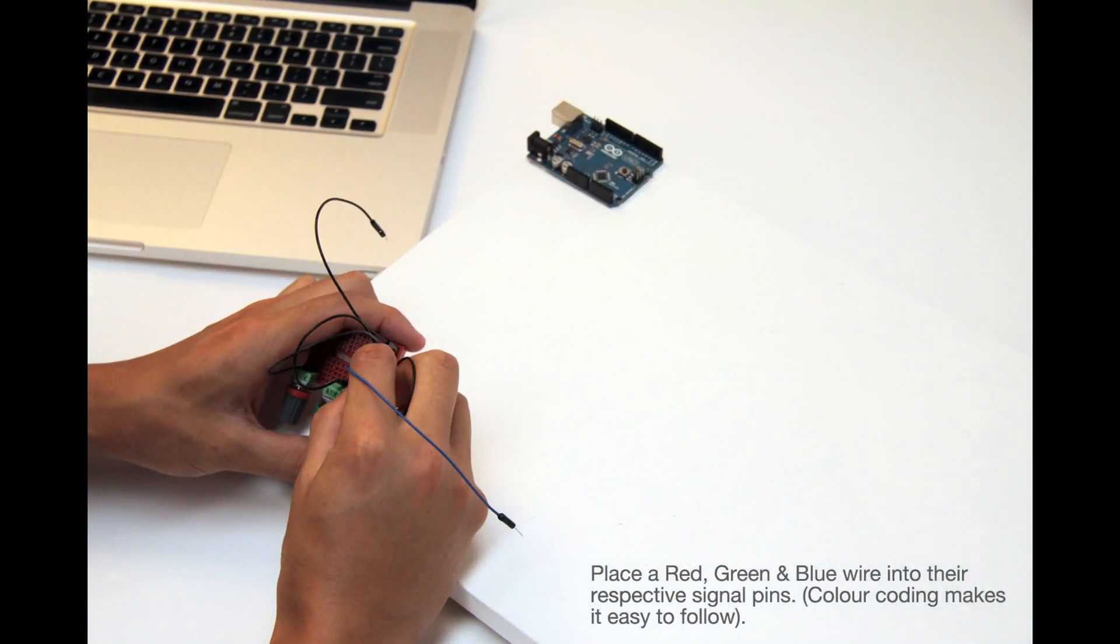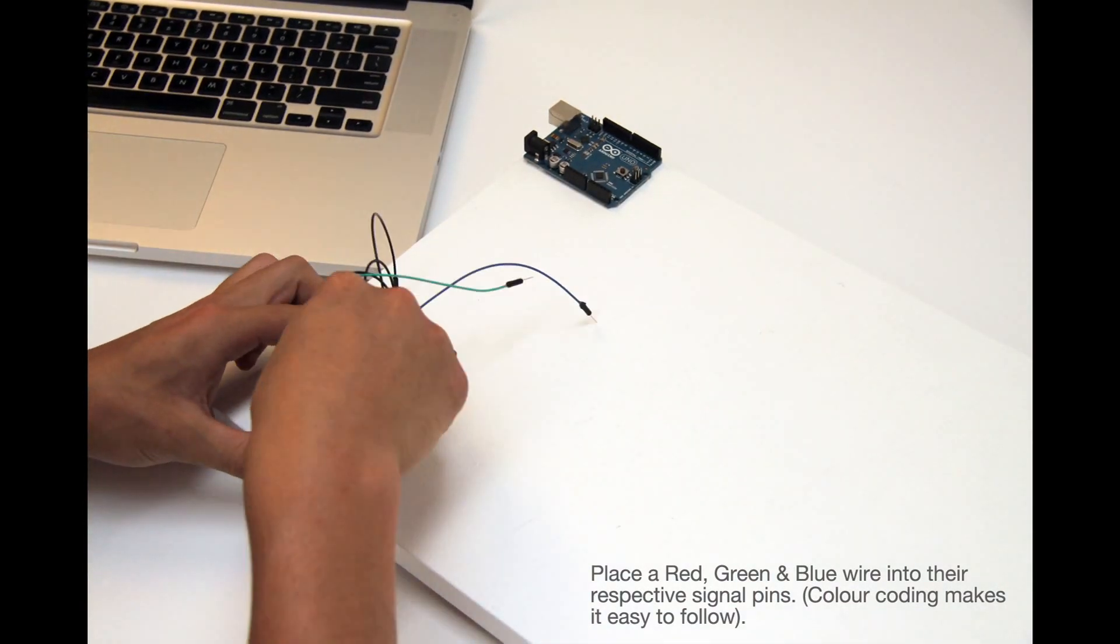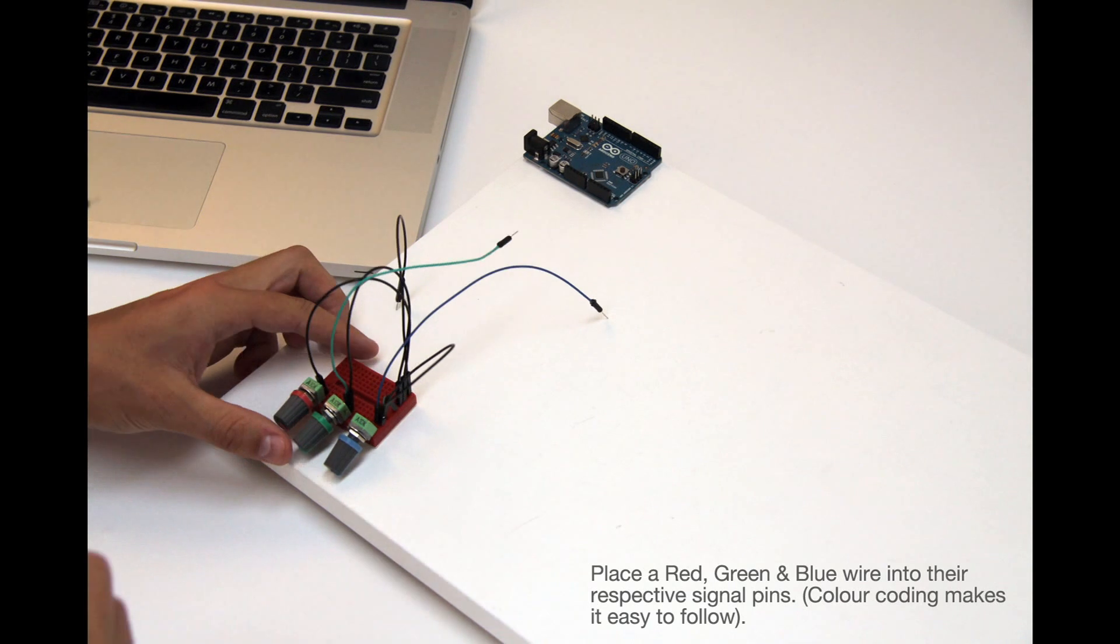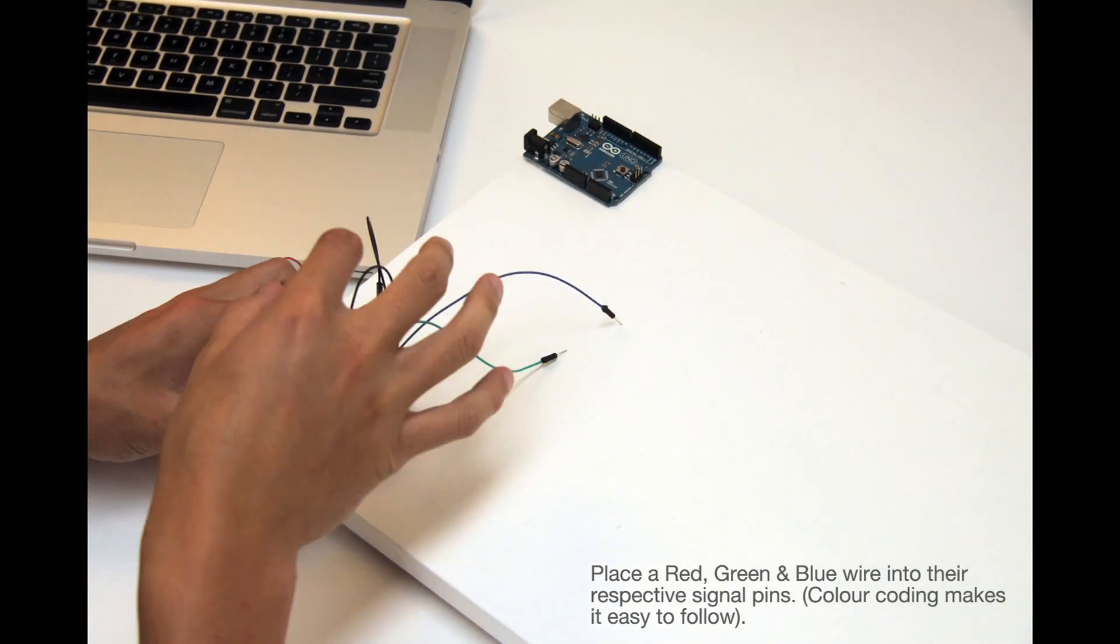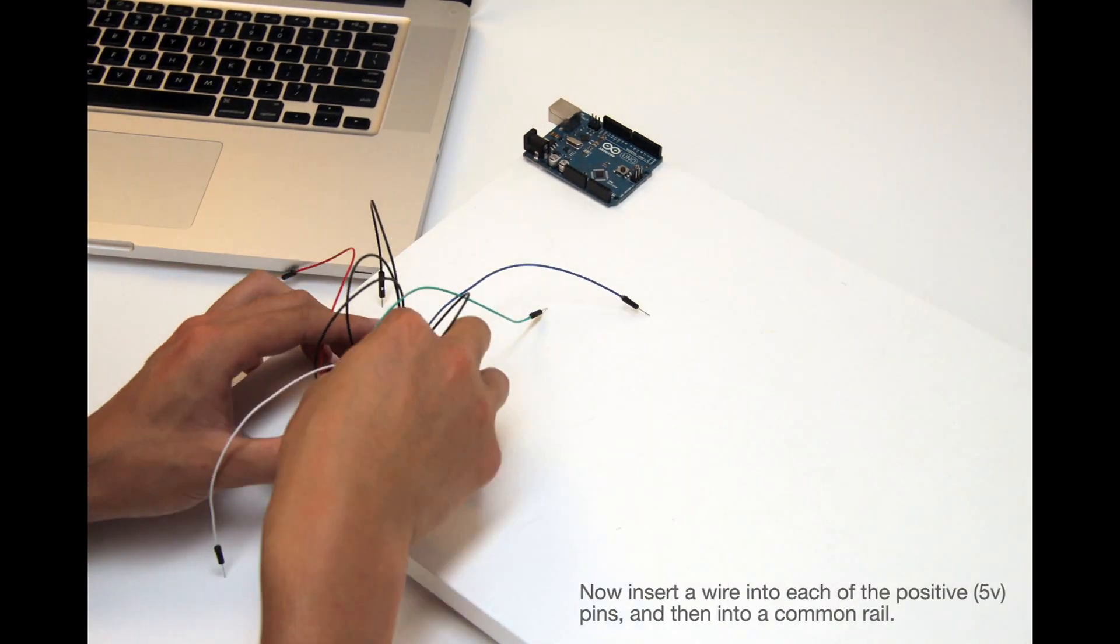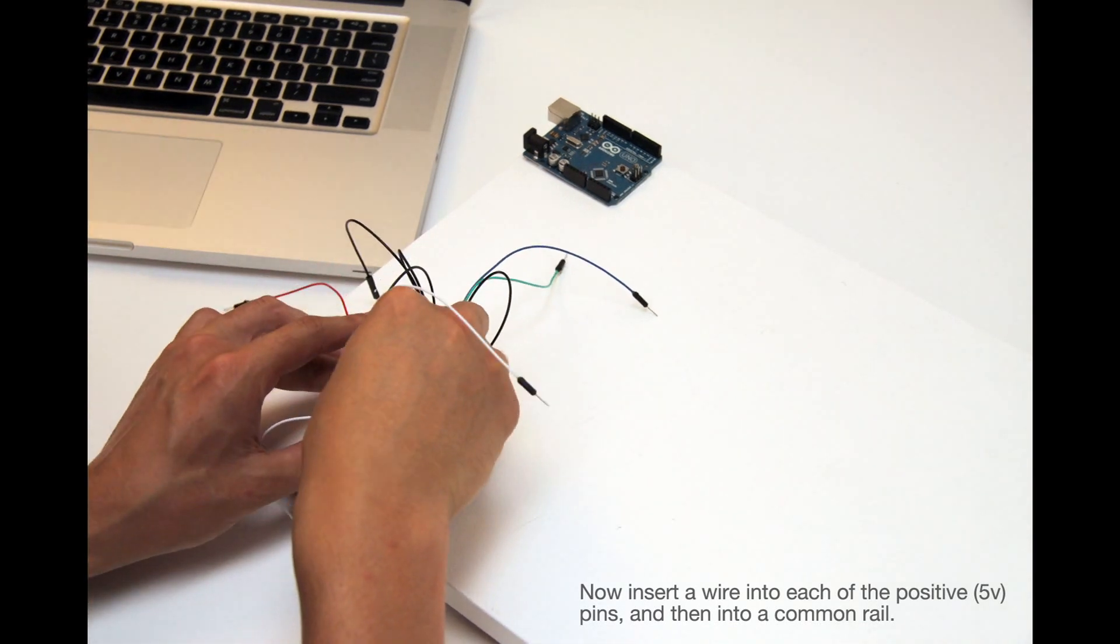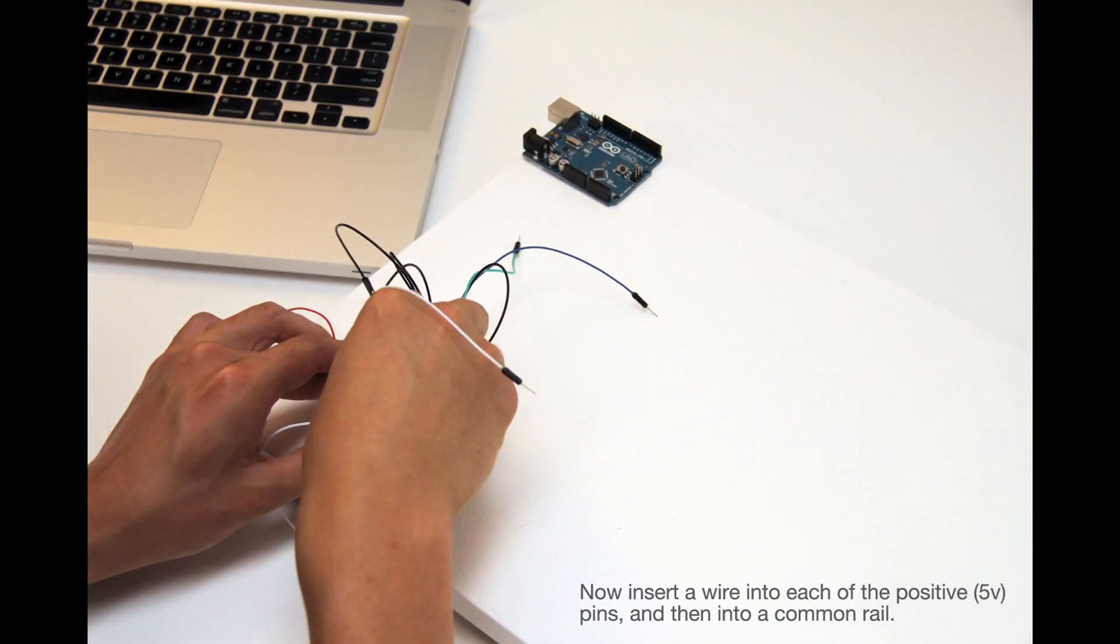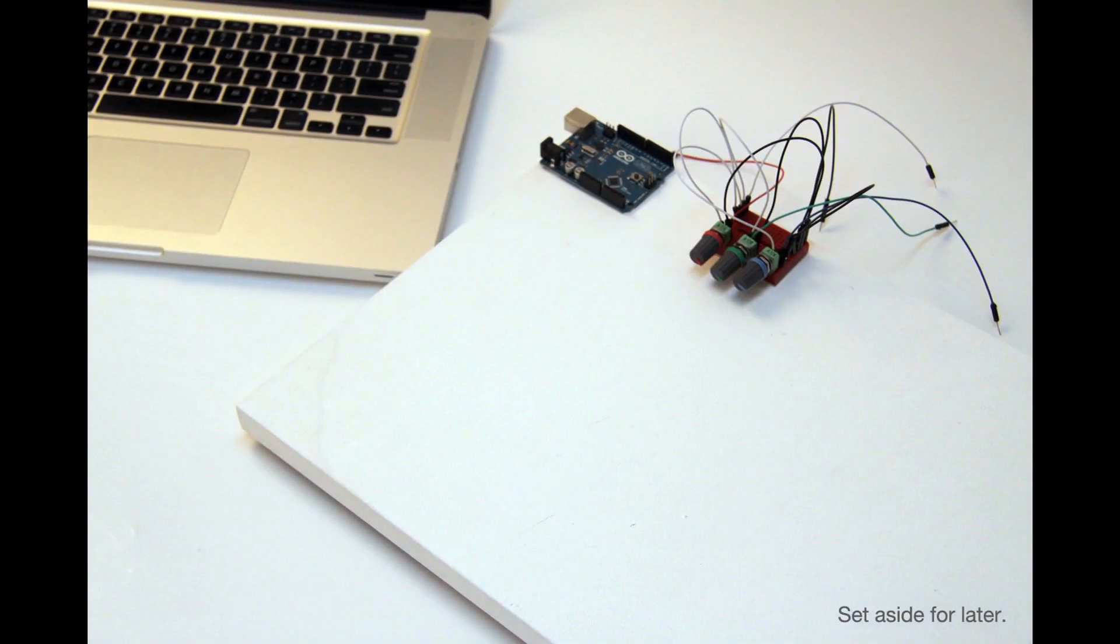Now I'll get color corresponding wires and place them on the RGB signals. Now connect the positive wire to the left hand pin of each potentiometer. Again connect them to a common rail.